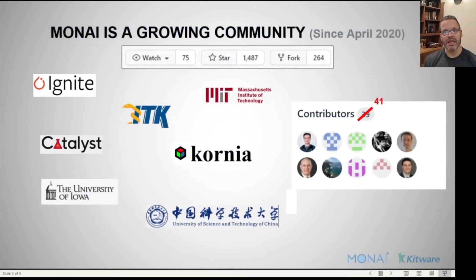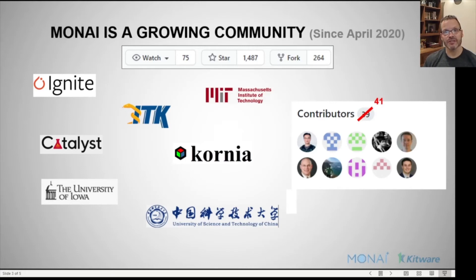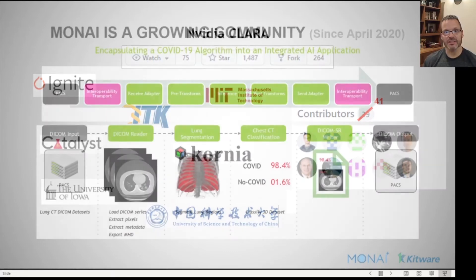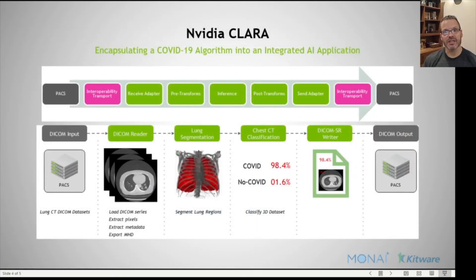As I mentioned, it's a growing community. It began in April of 2020 with MONAI 0.1 being released, and that community has grown significantly since then. We now have over 41 developers from a large variety of groups, including ITK, Hans Johnson from the University of Iowa, and a number of people here at Project Week. Additionally, it's received nearly 1,500 stars and 264 forks. It's appearing in journal articles in IEEE TMI, and we're very excited that it was just announced at RSNA that MONAI is going to become the foundation for Clara.